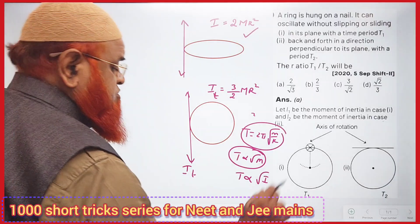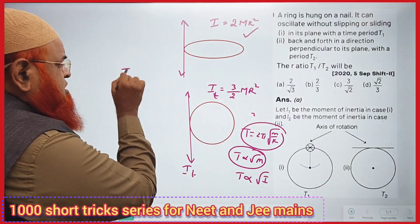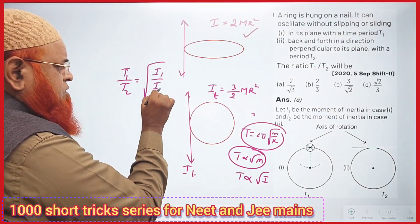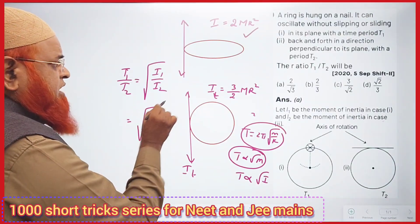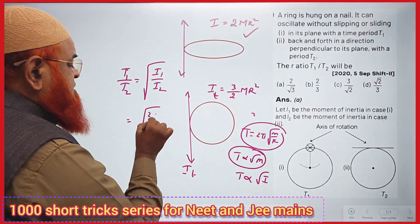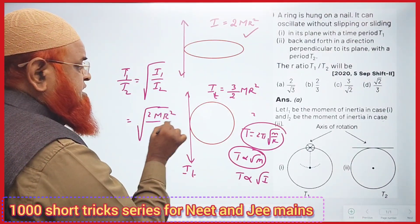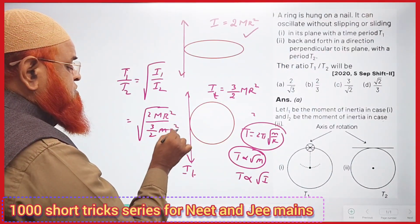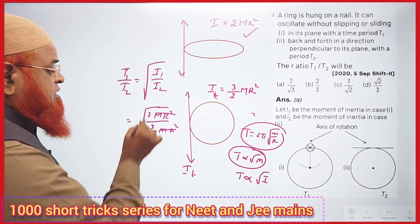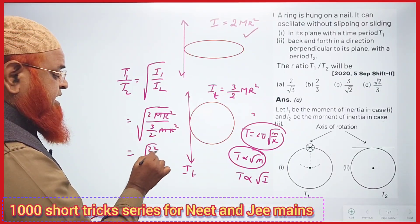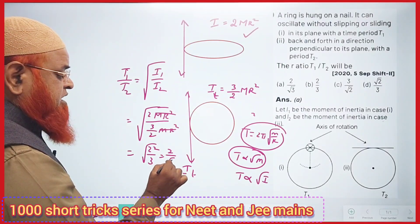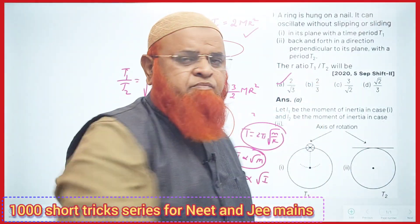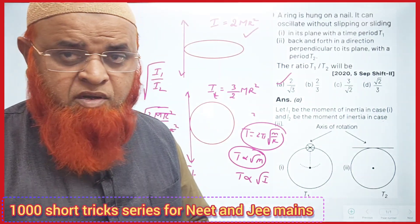In both cases, T is directly proportional to root of I, so T1/T2 equals root(I1) divided by root(I2). Substituting: root(2mr²) divided by root(3/2 mr²). The mr² cancels, giving root(2) divided by root(3/2), which simplifies to 2 divided by root 3. That's the answer — a simple shortcut method. Thank you very much, have a nice day!